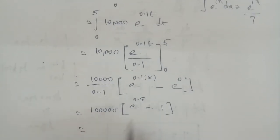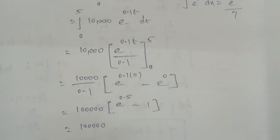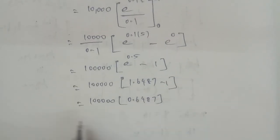Next, given in the question, e^0.5 value, that is 1.6487. So 1,00,000 times (1.6487 minus 1). The value is 1,00,000 times 0.6487. Here the value is 1,00,000 times 0.6487.